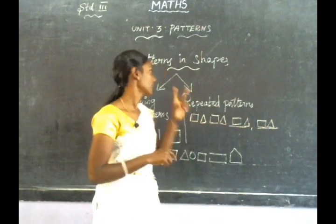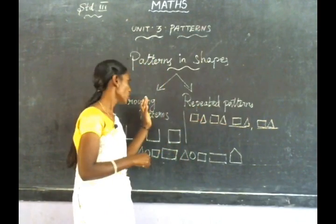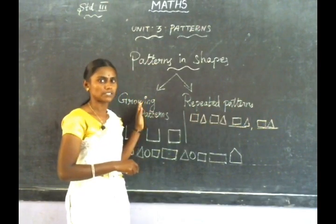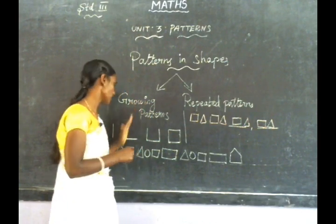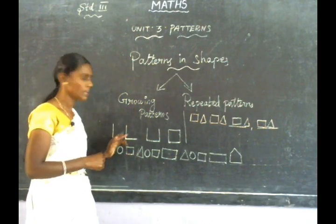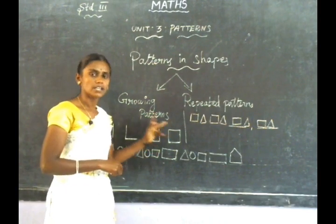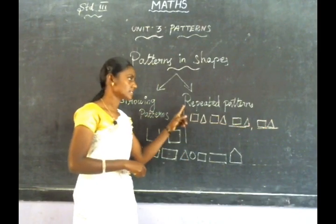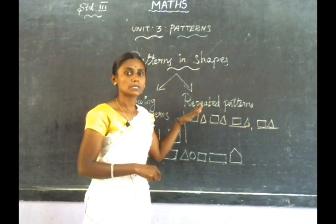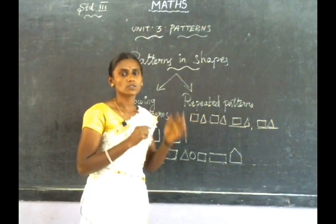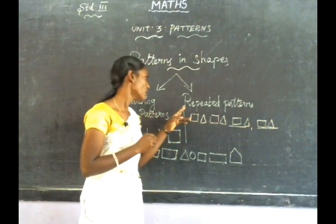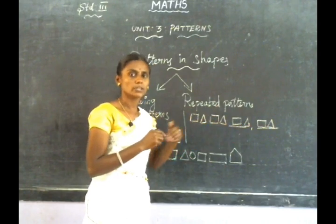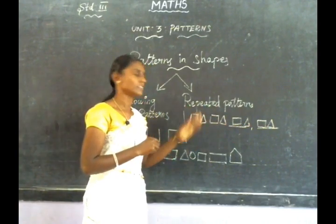Now we have patterns in shapes — two types of patterns: growing patterns and repeated patterns. Growing pattern: we drop one shape — first one line drop, next two lines, next three lines, next four lines. This is the growing pattern. Here we have a circle, triangle, then next circle — this is repeated. This is repeated pattern.